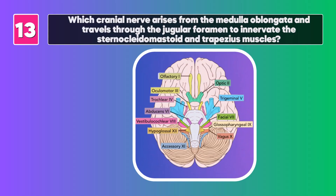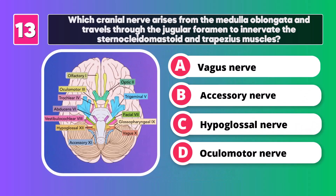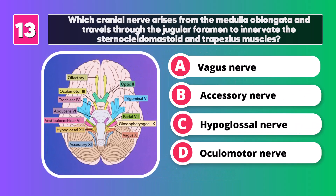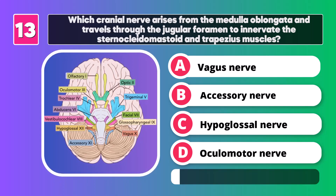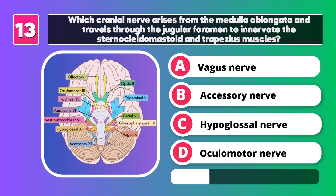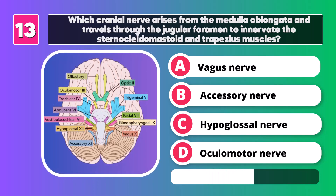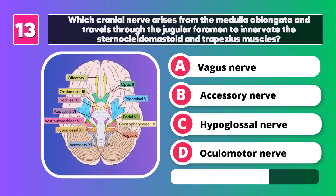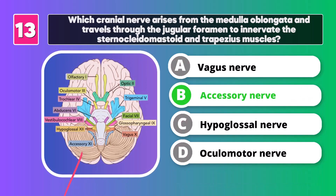Which cranial nerve arises from the medulla oblongata and travels through the jugular foramen to innervate the sternocleidomastoid and trapezius muscles? Accessory nerve.